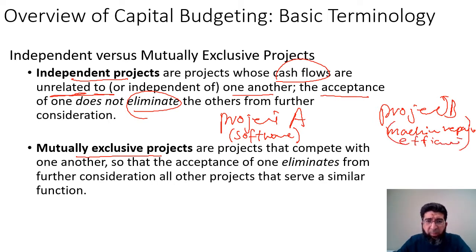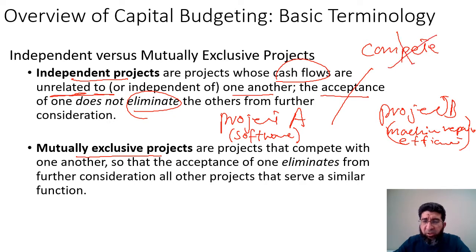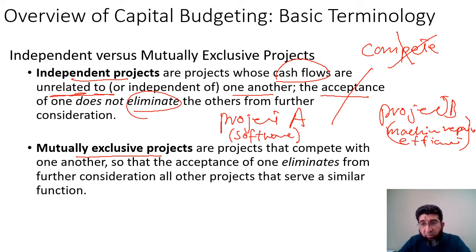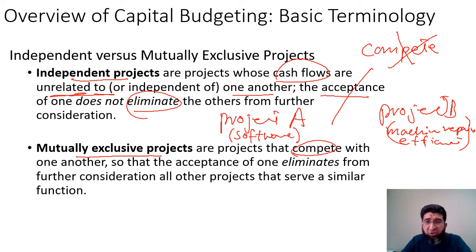These two projects do not compete with each other, so both can be accepted if there are enough funds, or they can be prioritized based on urgency rather than whether A is better than B. Mutually exclusive projects are projects that compete with one another for the same funds. In that case, we rank them by which creates more value, and the one that creates more value is accepted.